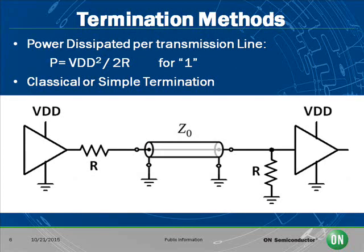Here we see again a simple termination to a transmission line. However, there are many others. For the simple termination method, the power consumed is VDD squared over 2R. This is for a logic 1 or high level, and power is 0 for a logic 0.